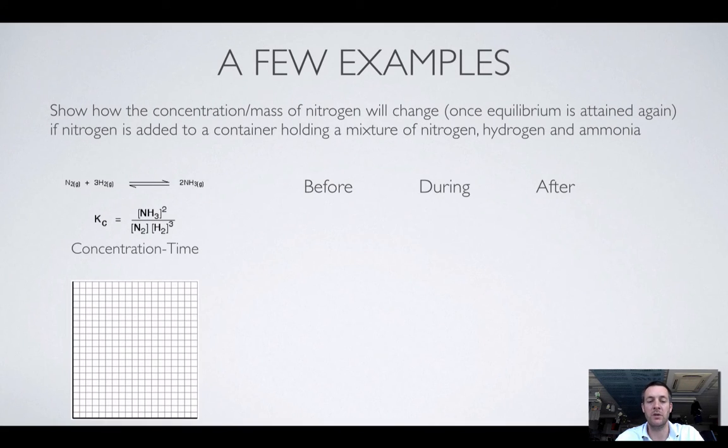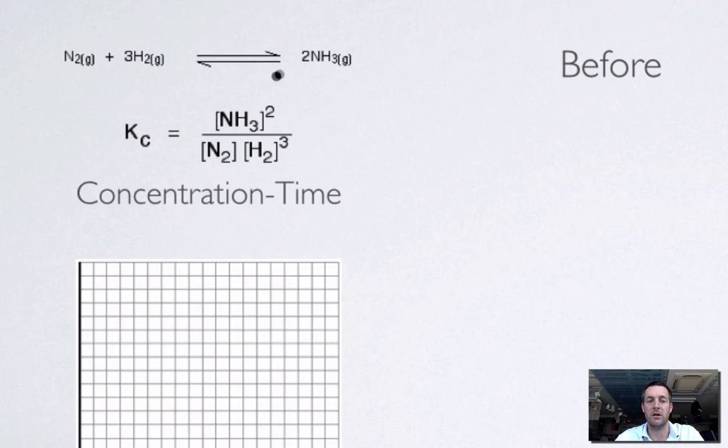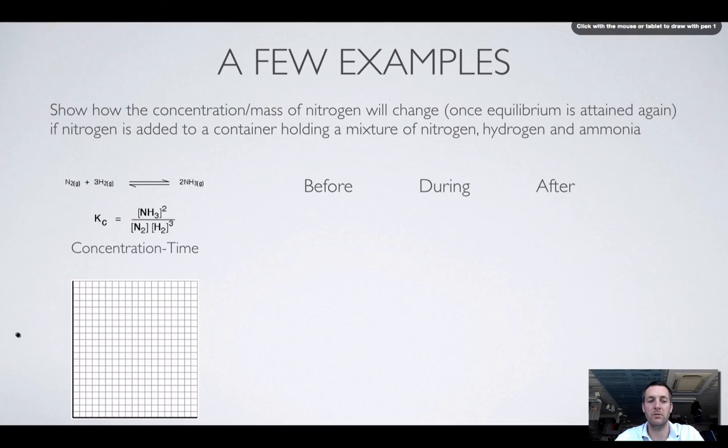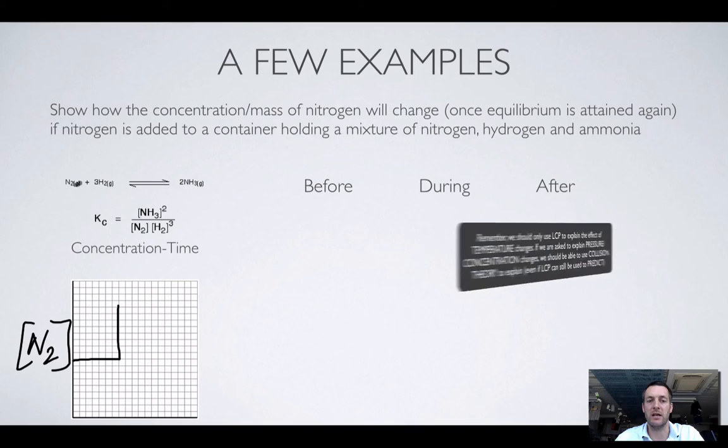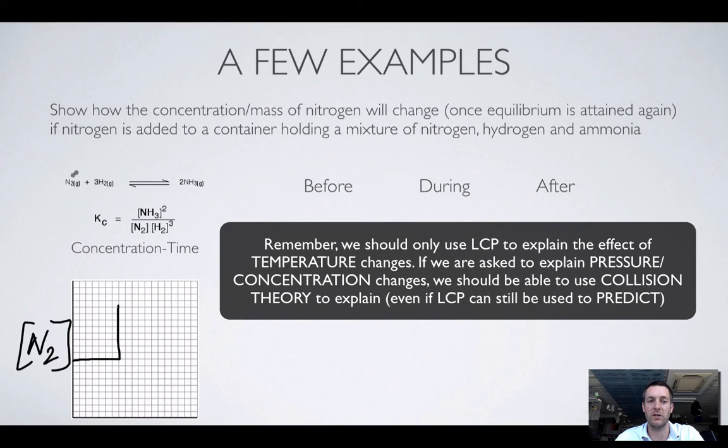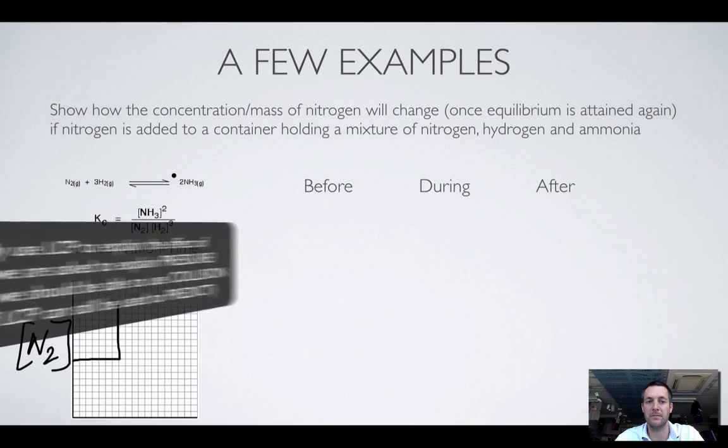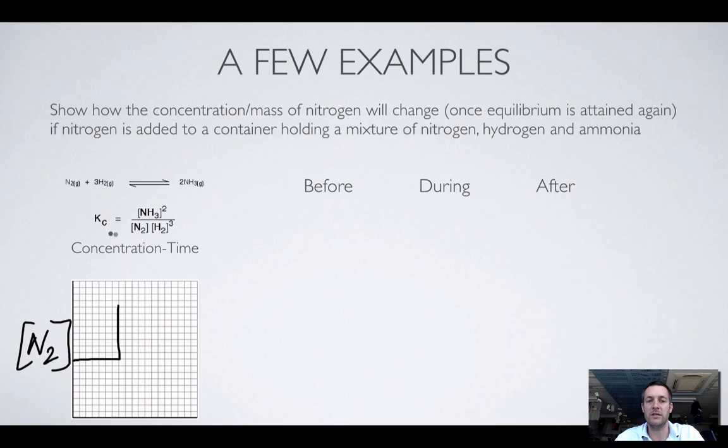Here's another more complicated example. This has got this equilibrium system in it, the one that's used in the Haber process, like nitrogen and hydrogen reacting together to form ammonia. Show how the concentration and mass of nitrogen will change. We're at equilibrium, so the concentration is flat. We add some nitrogen, it suddenly shoots up. It's going to fall back down again. Le Chatelier predicts that it will move forward. Collision theory tells us that there's a greater chance of these things colliding now, so the forward reaction will be favoured. Can we use this equilibrium constant expression to decide whether the nitrogen concentration will fall back down to its original value or not?